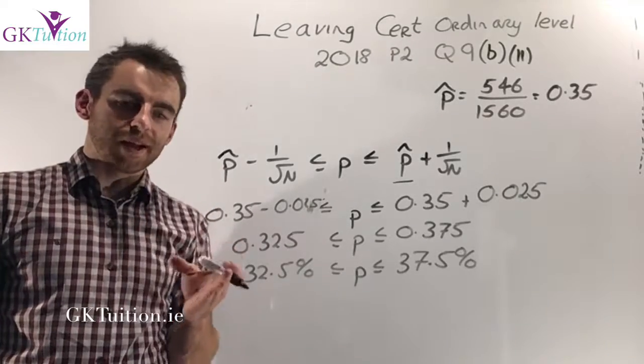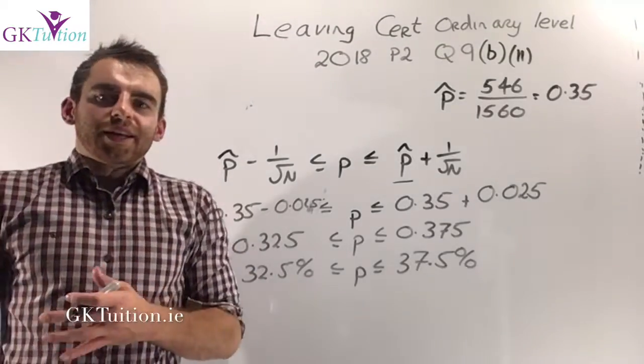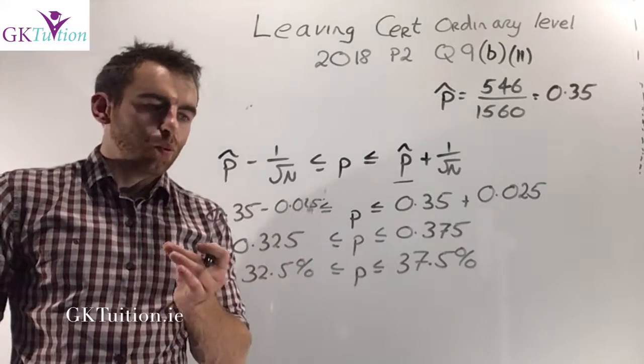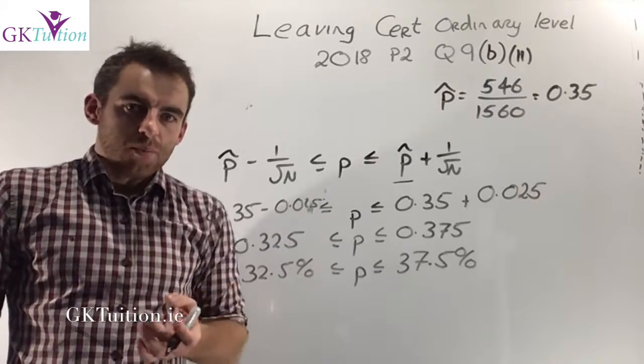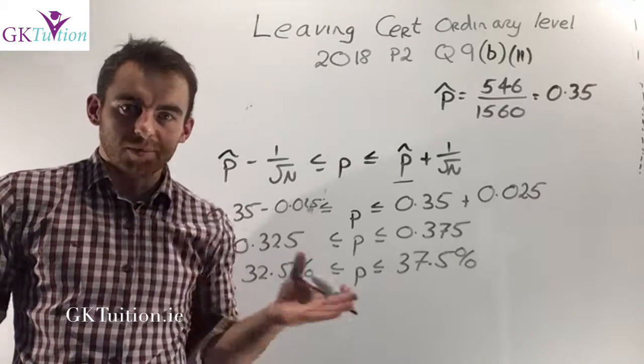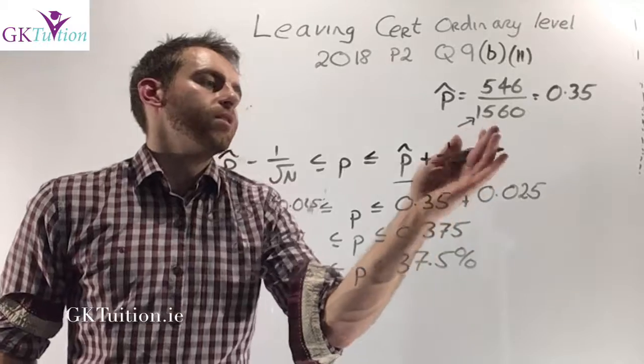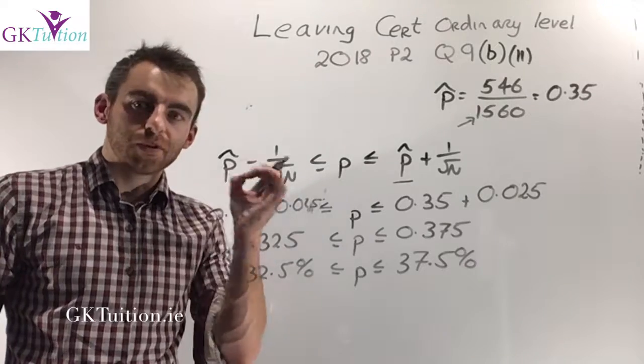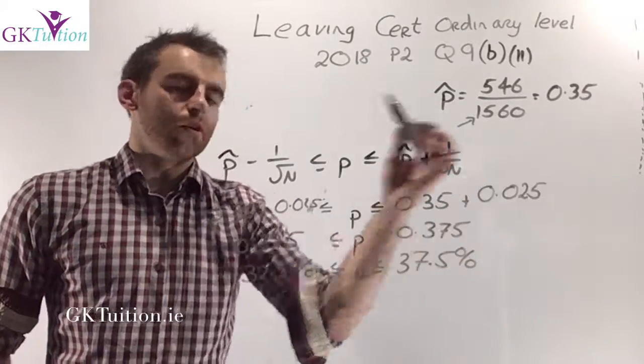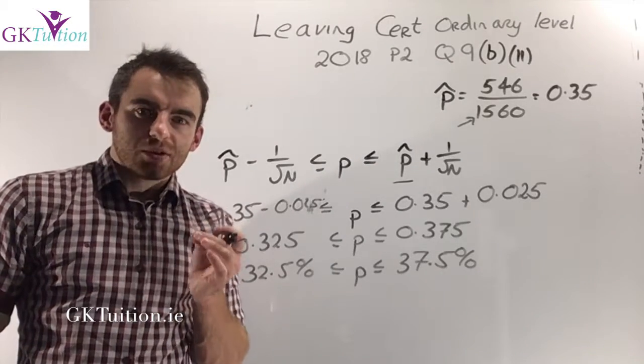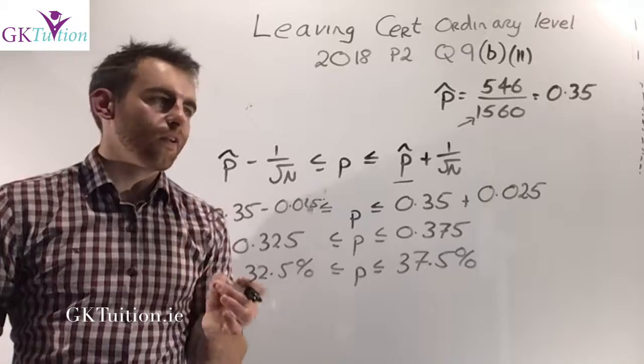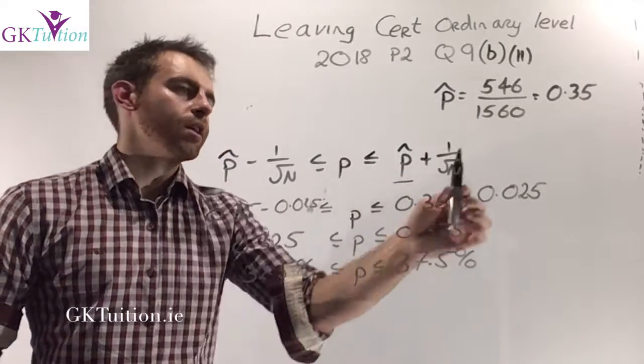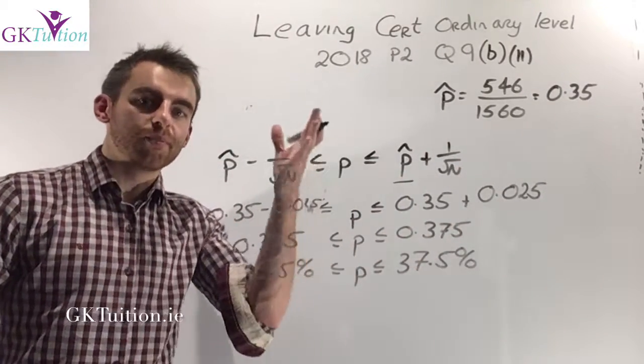Now the maths there is relatively straightforward but understanding the maths is more complicated. Let's imagine that a million people have watched this show. I'm trying to determine what percentage actually enjoy it. But obviously it's impractical to survey a million people. So all I can do is take a small sample. In this case I took a sample of 1,560 people and figured out what percentage enjoyed the show—35%. But that doesn't necessarily mean 35% of the 1 million viewers enjoy the show. This sample might be skewed one way or another.